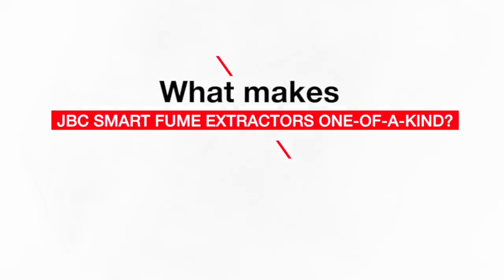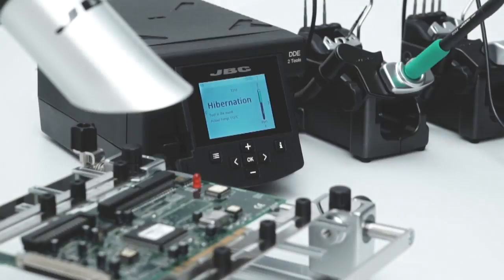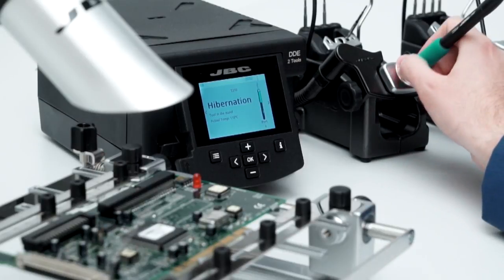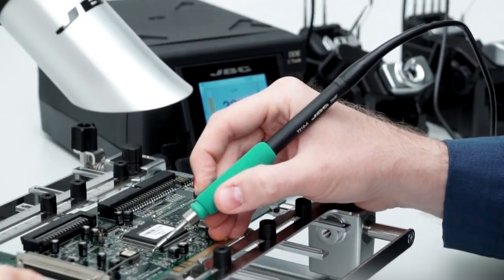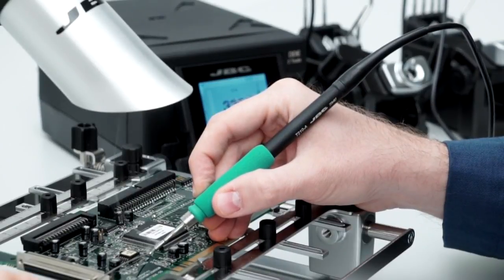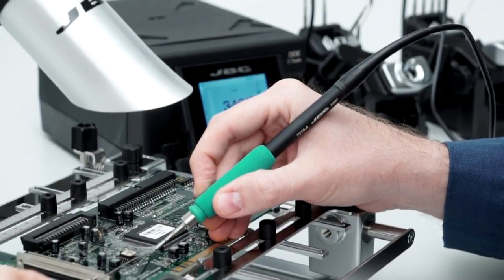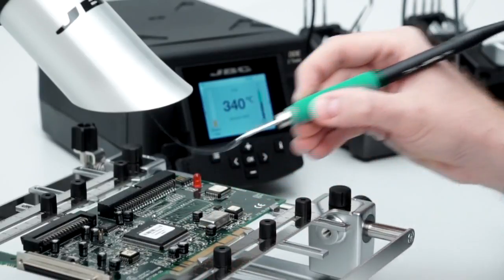What makes JBC Smart Fume Extractors one of a kind? The Smart operation kicks in automatically, extracting fumes at the work area when the tool is lifted from the stand, and goes into standby mode when the job is done.